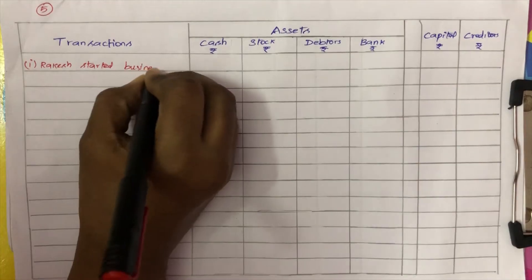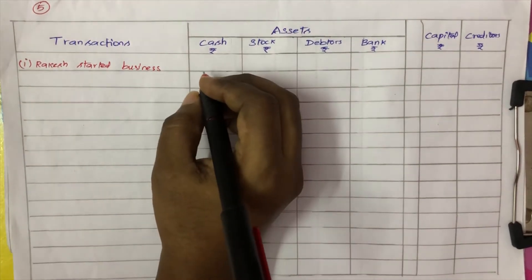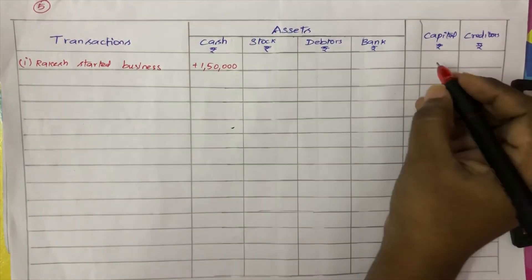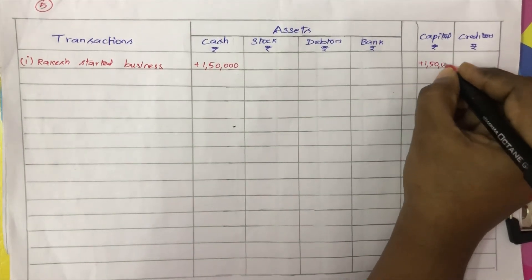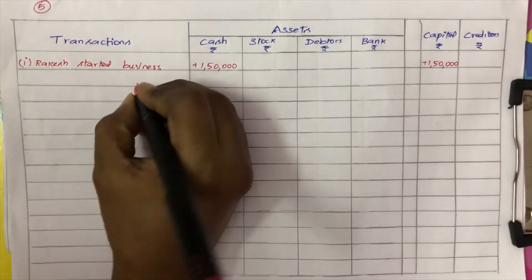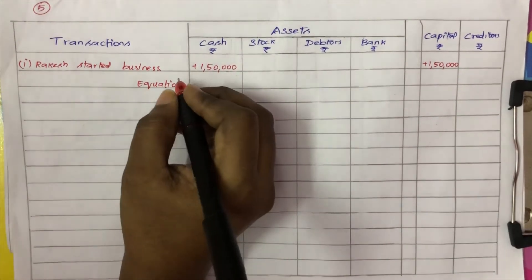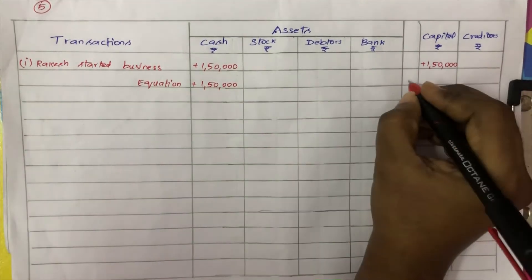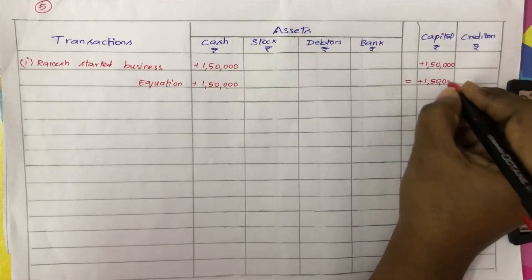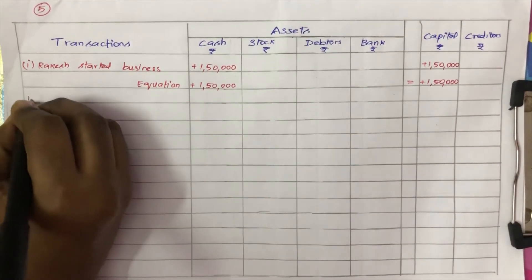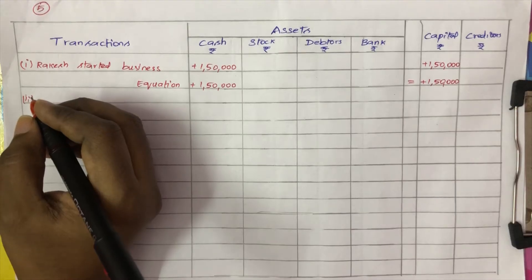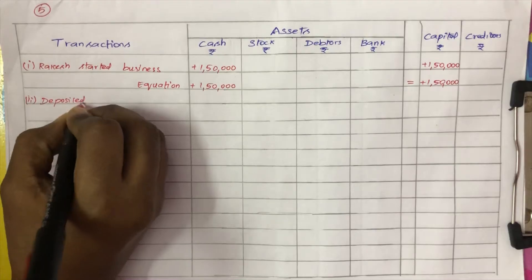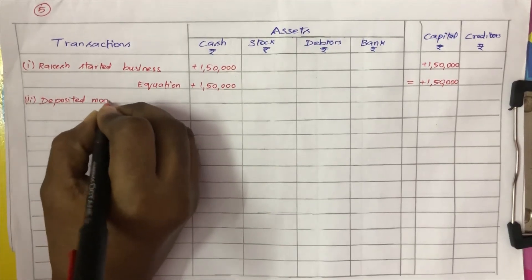First transaction — assets side and liabilities side columns are set up. Rakesh started business with cash Rs. 1,50,000. Capital is recorded as Rs. 1,50,000 on the liabilities side.